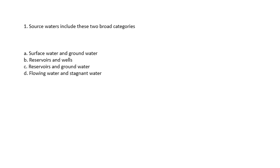Question 1: Source waters include these two broad categories. Surface water and groundwater, reservoirs and wells, reservoirs and groundwater, or flowing water and stagnant water. The answer is surface water and groundwater.